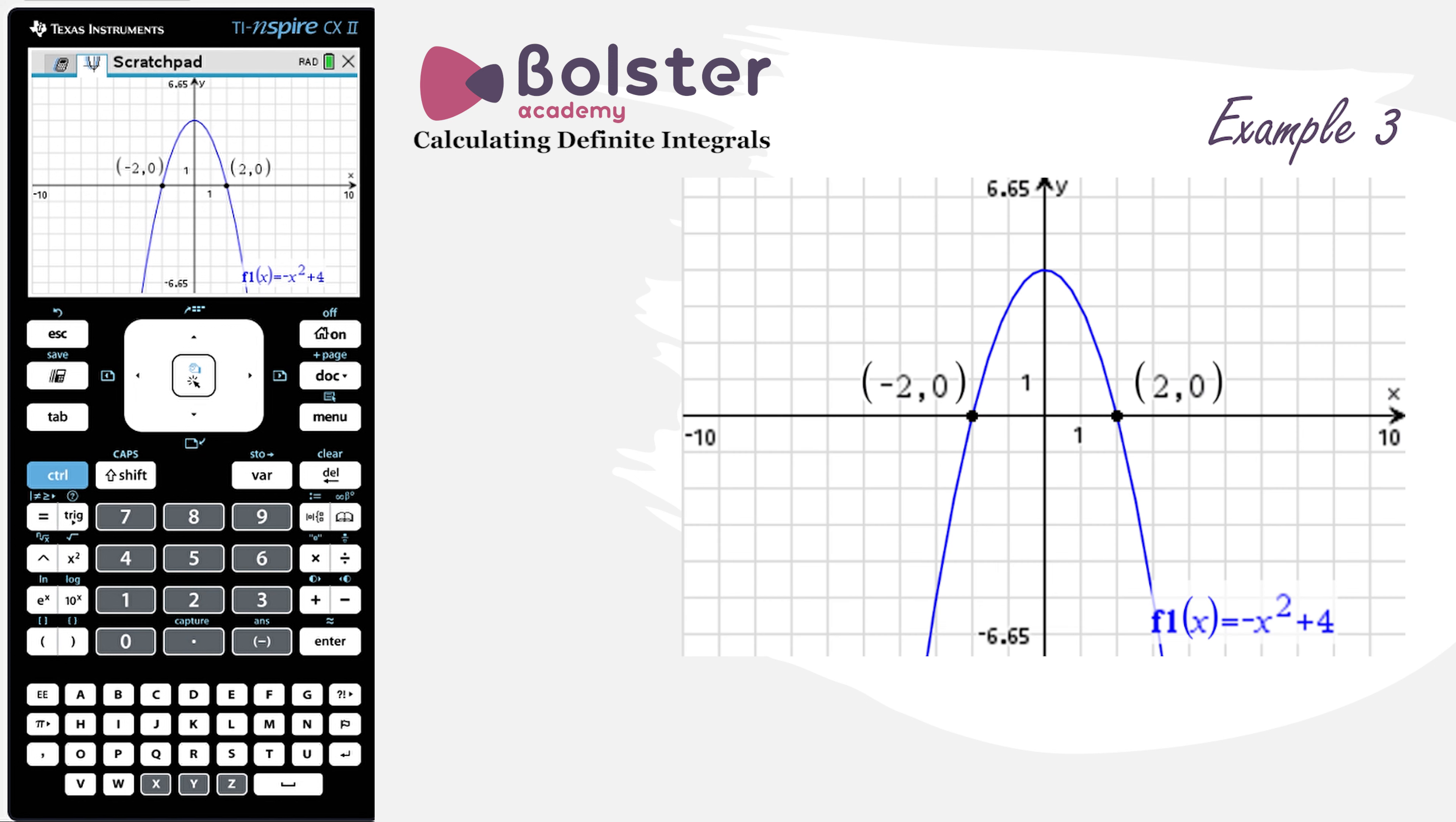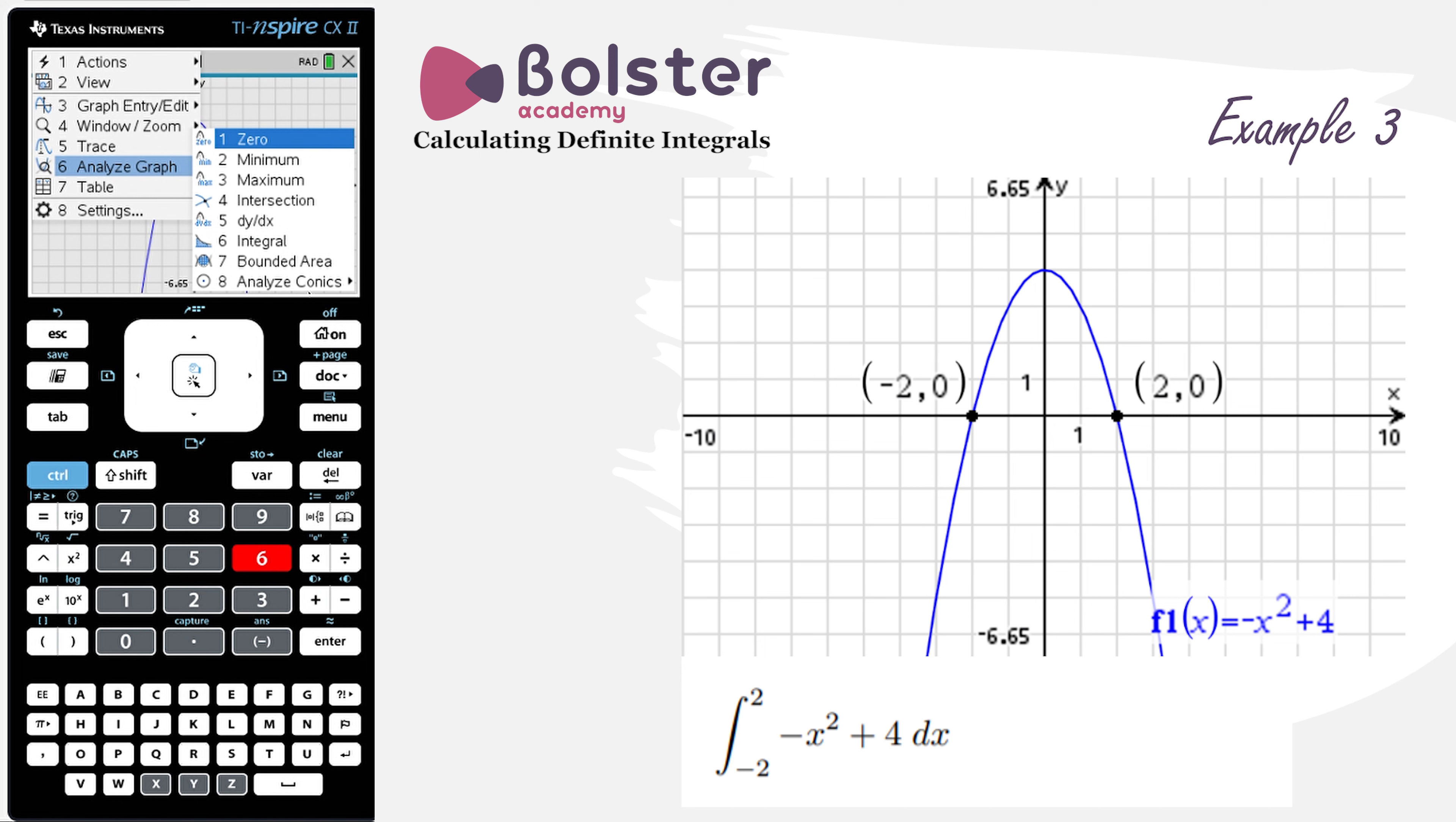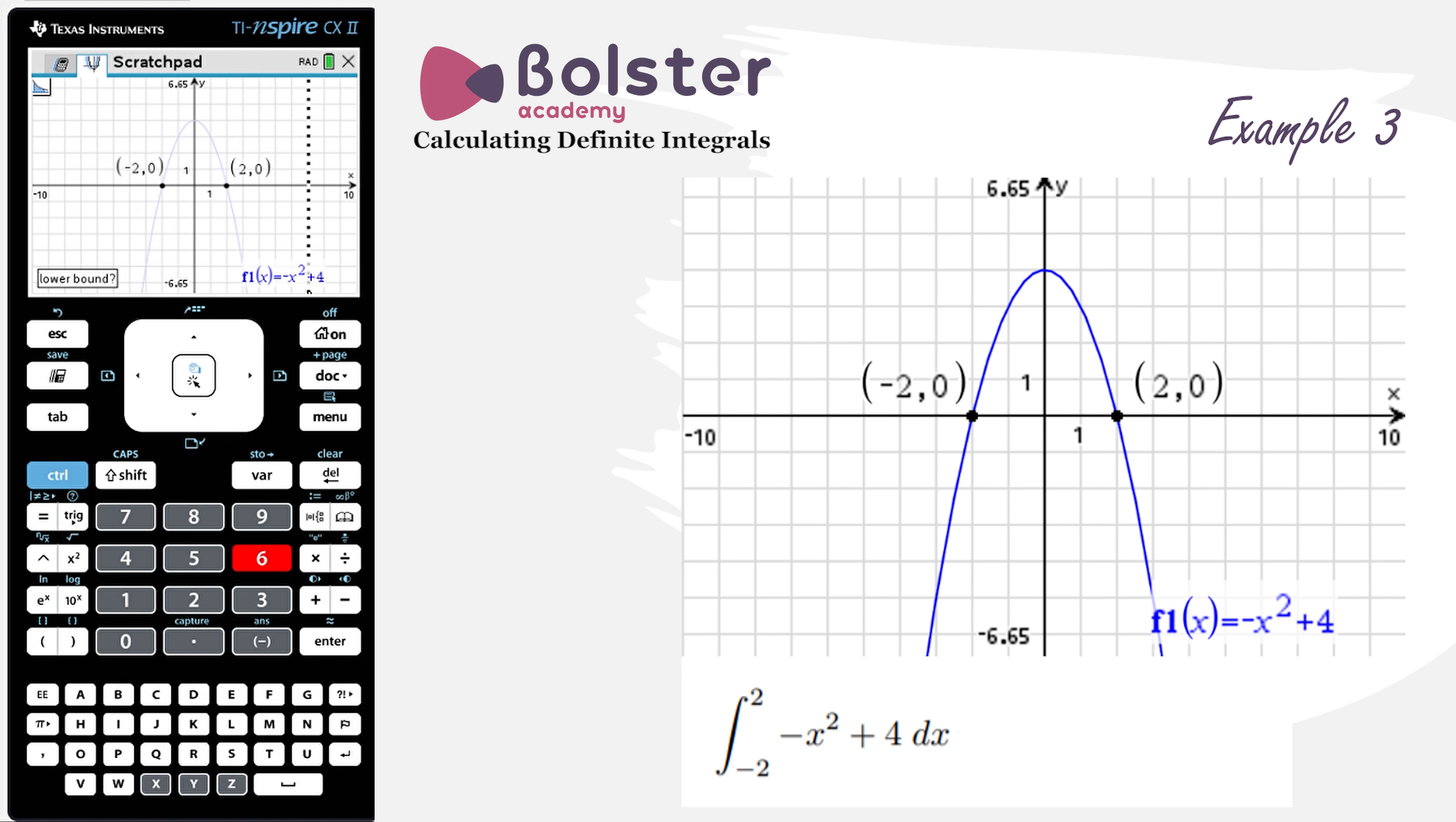So now we have all the information that we need in order to be able to do our integral. So we go into Menu, Analyze Graph, Integral, option number 6, and we want our lower bound to be minus 2, and we want our upper bound to be 2.